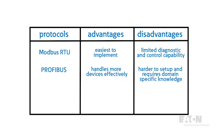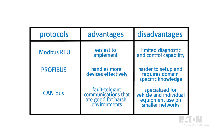CANBUS, or Controller Area Network, is a Fieldbus protocol specialized for vehicle and individual equipment use. It focuses on providing fault-tolerant communications as well as diagnostic capabilities between a smaller network of devices, both of which are necessary in harsh mobile environments like cars.